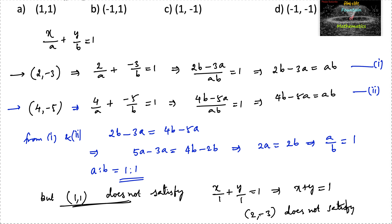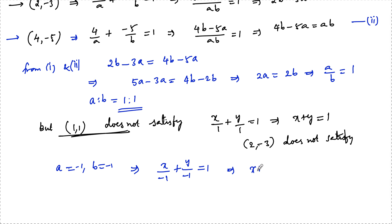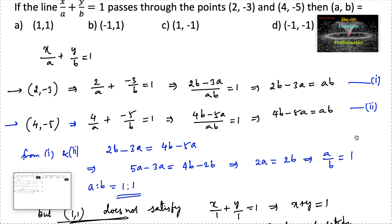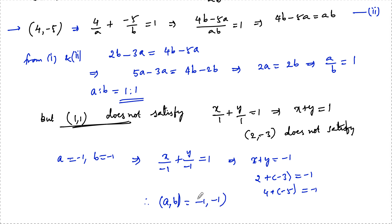Then trying a = -1 and b = -1: x upon (-1) plus y upon (-1) equals 1, which gives x + y = -1. Checking: 2 + (-3) = -1 ✓, and 4 + (-5) = -1 ✓. Both points satisfy the equation, so a, b can be considered to be (-1, -1).